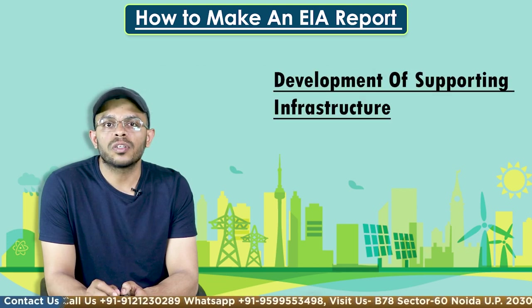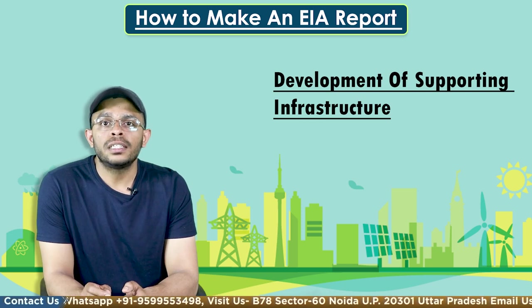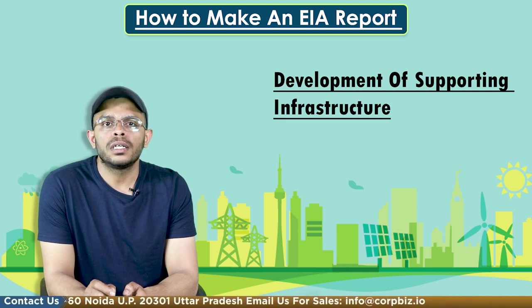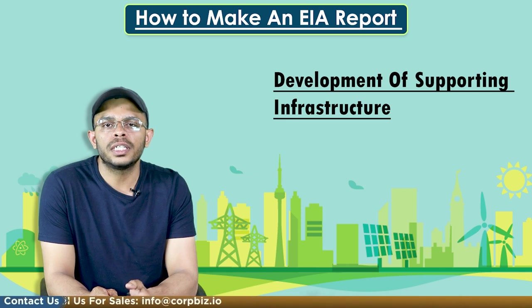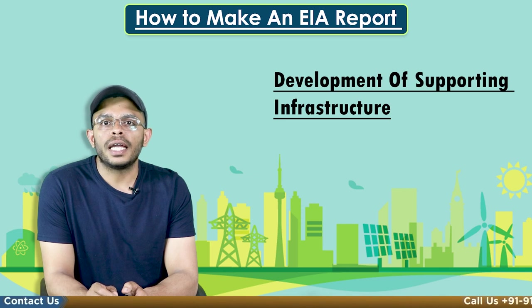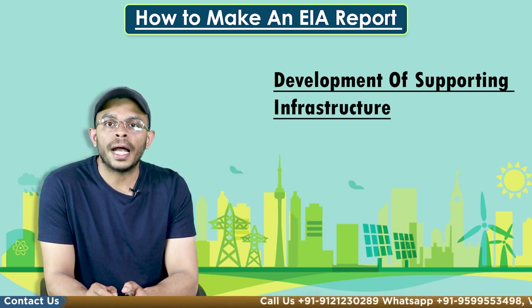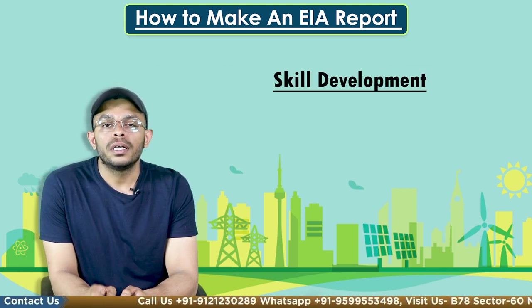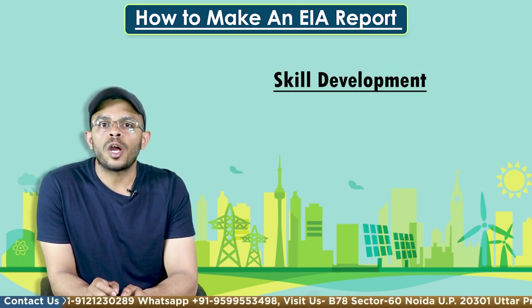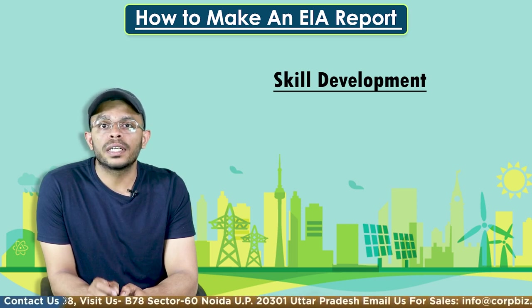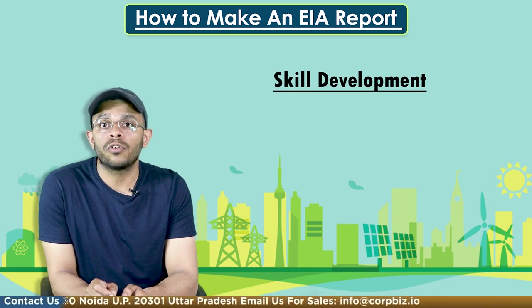Next is development of supporting infrastructure. As per the guidelines, the EIA must include improvements to social infrastructure such as roads, trains, townships, housing, water supply, electricity, drainage, education institutions, hospitals, etc. Employment potential for skilled, semi-skilled, and unskilled labour during the construction and the operation phase of the project must also be highlighted. Special attention should be paid to the employment potential of the local population as well as the requirement to impart relevant skills to them in order to train them to be eligible for such employment.